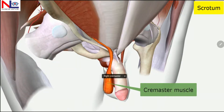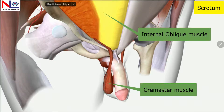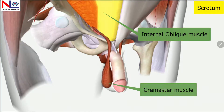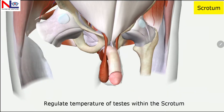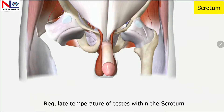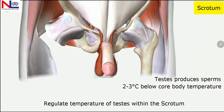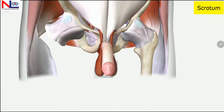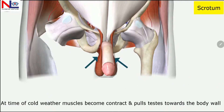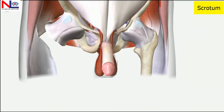The cremaster muscle is an extension of the internal oblique muscle. These muscle fibers regulate the temperature of the testes within the scrotum, as the testes produce sperm requiring two to three degrees Celsius below core body temperature. During cold weather, these muscles contract and draw the testes closer to the body wall so they can absorb heat and maintain the temperature required for normal sperm production.